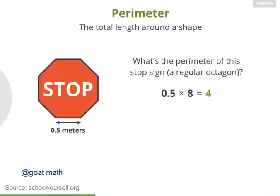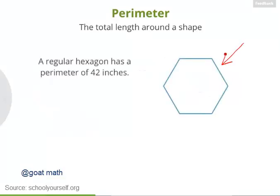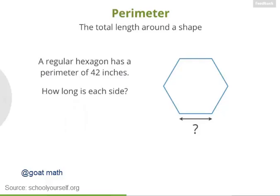Next, let's try working backwards. Suppose I tell you that this regular hexagon has a perimeter of 42 inches — how long is each side? You divided the perimeter, 42 inches, by the number of sides, 6, and found that each side is 7 inches.